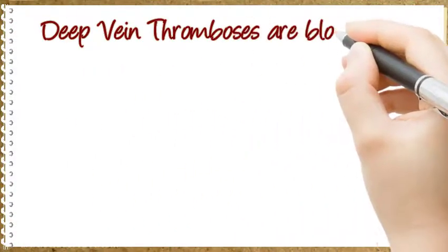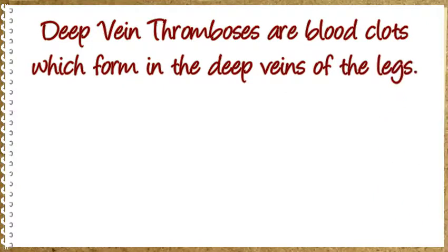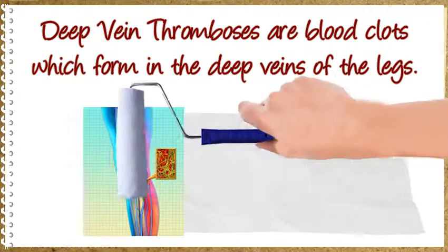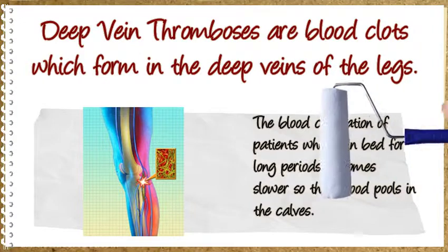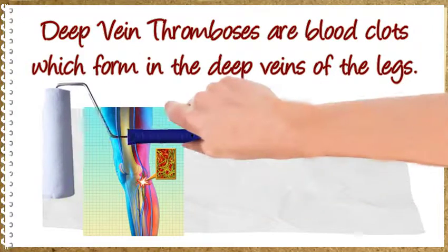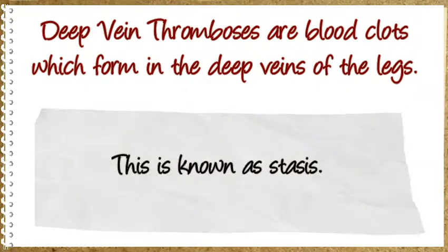Deep vein thromboses are blood clots which form in the deep veins of the legs. The blood circulation of patients who lie in bed for long periods becomes slower, so that blood pools in the calves. This is known as stasis.